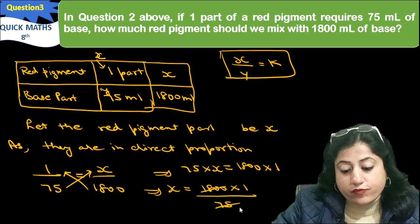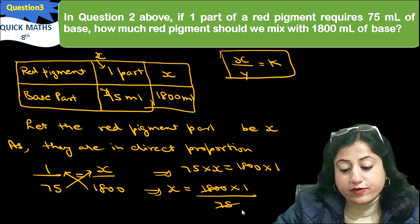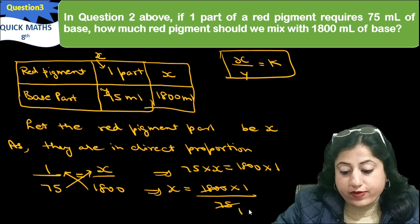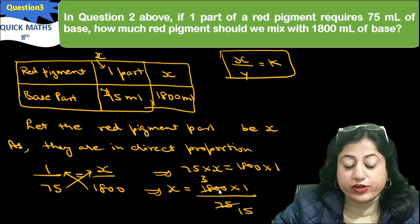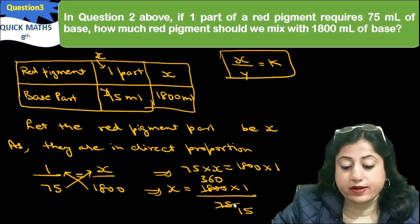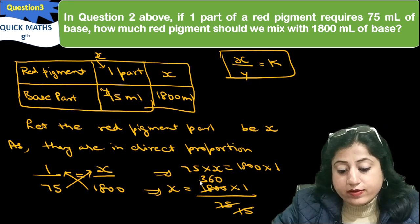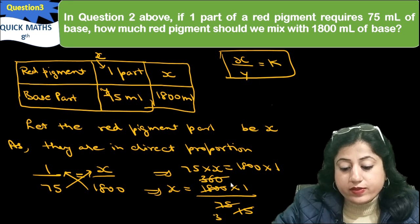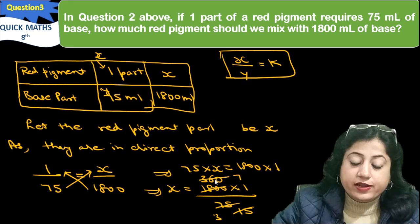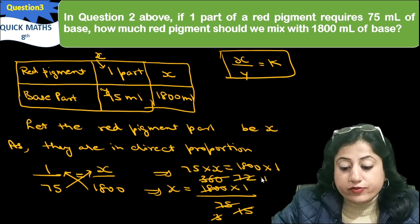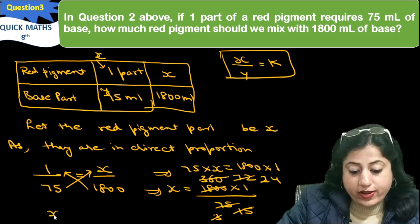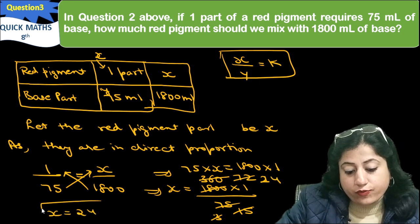We will divide by 5. [performs step-by-step division: 1800 divided by 75] So the value of x is 24.